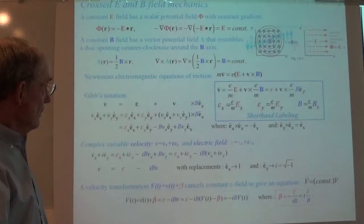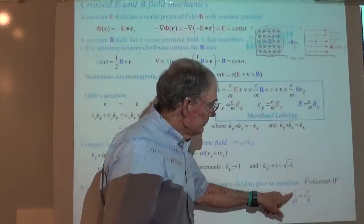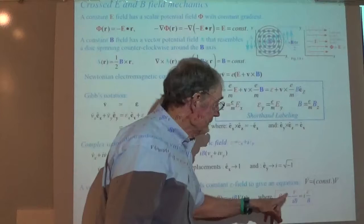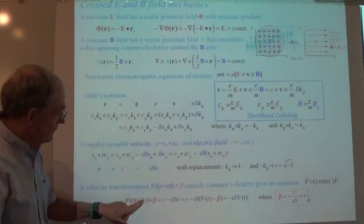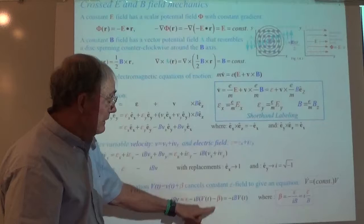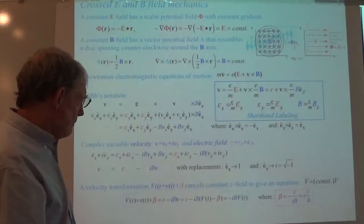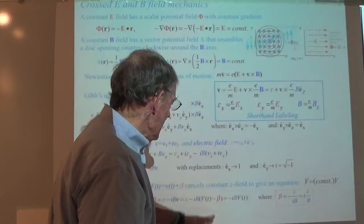I'm going to take away this beta — this extra dangling term epsilon/iB — from the velocity. So this big V-dot here is the little v plus beta-dot. And then little v is big V minus beta. We get rid of the extra term. So little v is this: v equals E/B in the y-direction, that's the i-direction.